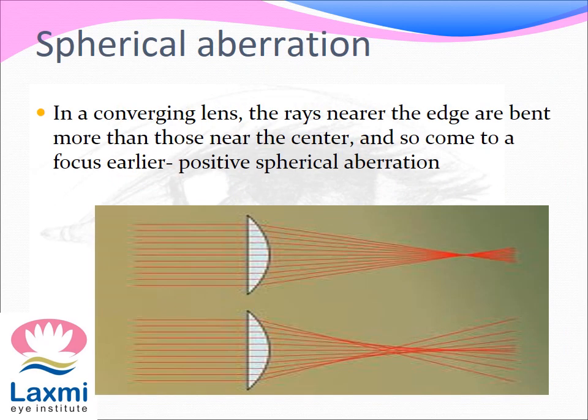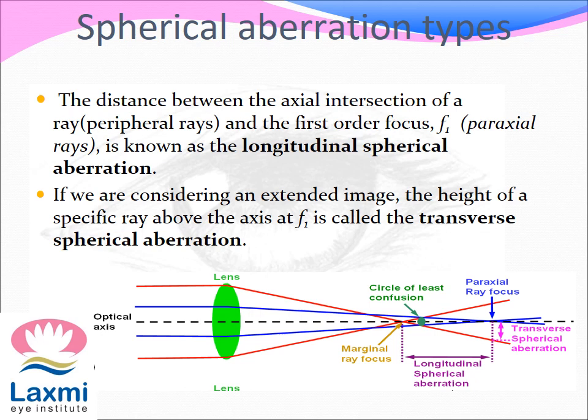Spherical aberration is one where, when rays of light pass through a converging lens, the rays at the edge of the lens are more convergent than those at the center, giving an earlier focus or a positive spherical aberration. There are two types: longitudinal spherical aberration, which is the distance between the axial intersection of the peripheral rays and the first order focus, i.e. F1; and transverse spherical aberration, which is the height of that specific ray above the axis at F1.